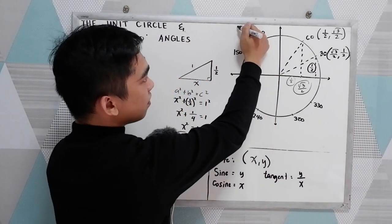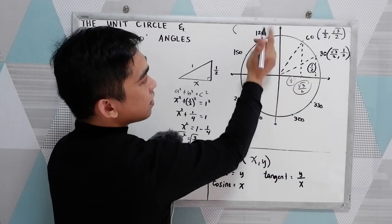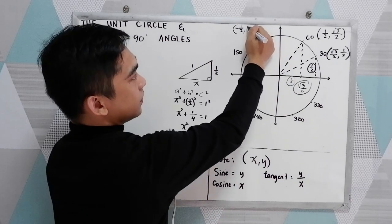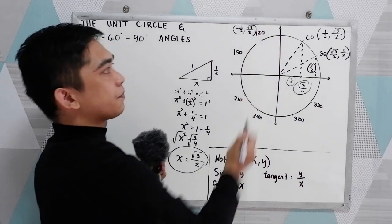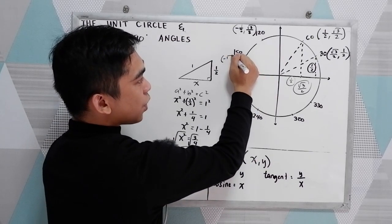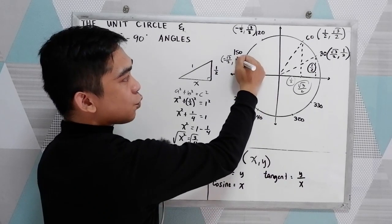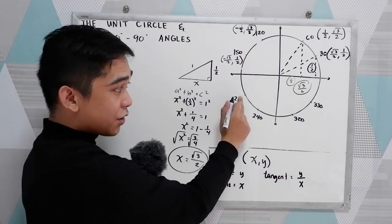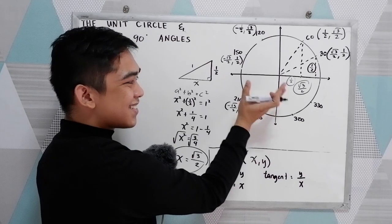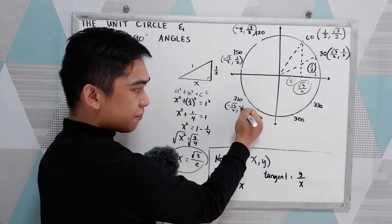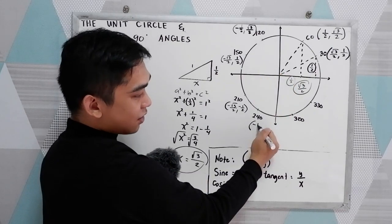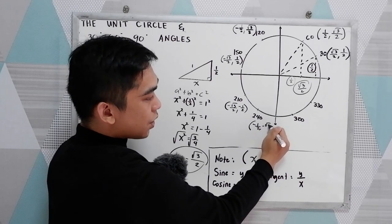And now we have 120 degrees. Our x is in quadrant two, so we have negative one half, then square root of three over two. And for 150 degrees, we have negative square root of three over two, and positive one half. For 210 degrees, x is negative square root of three over two. Since this is located in quadrant three, both are negative. For 240 degrees, we have negative one half, then negative square root of three over two.